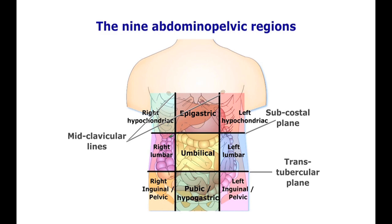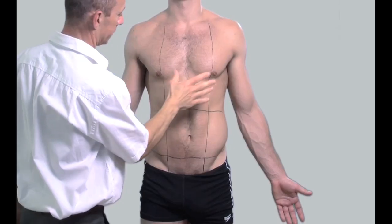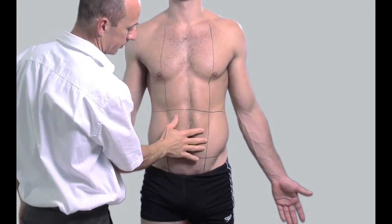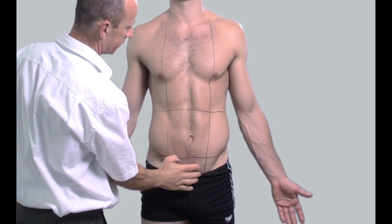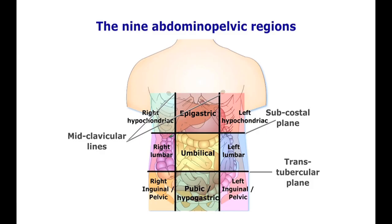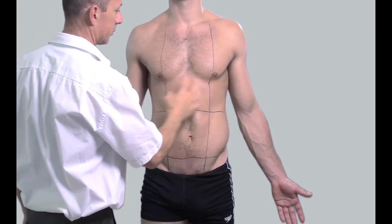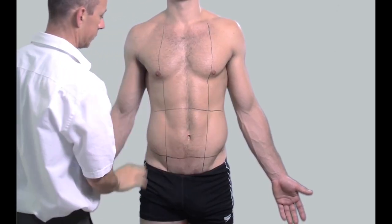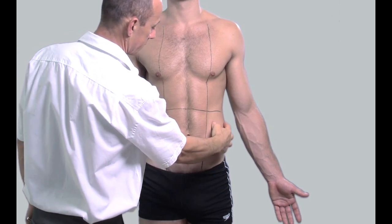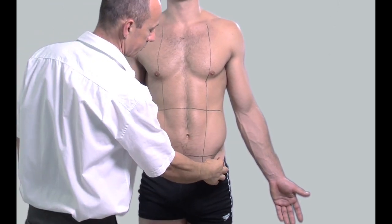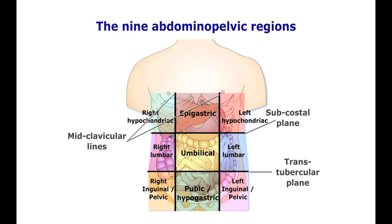The central squares or regions are named the epigastric, umbilical, and hypogastric or pubic. The lateral regions are the right and left hypochondriac, the right and left lumbar, and the right and left inguinal regions. These are also called the pelvic or iliac regions.